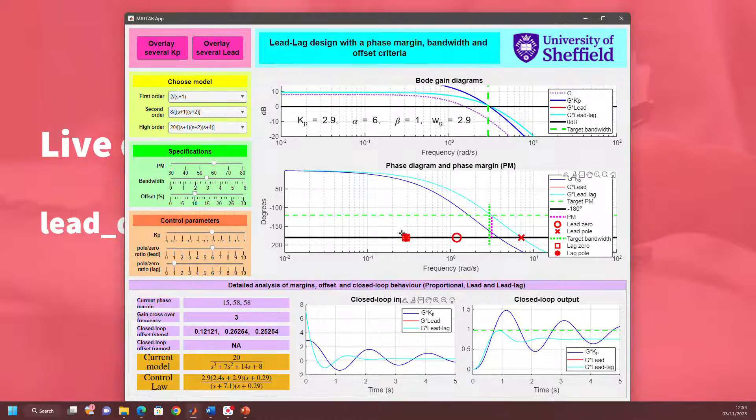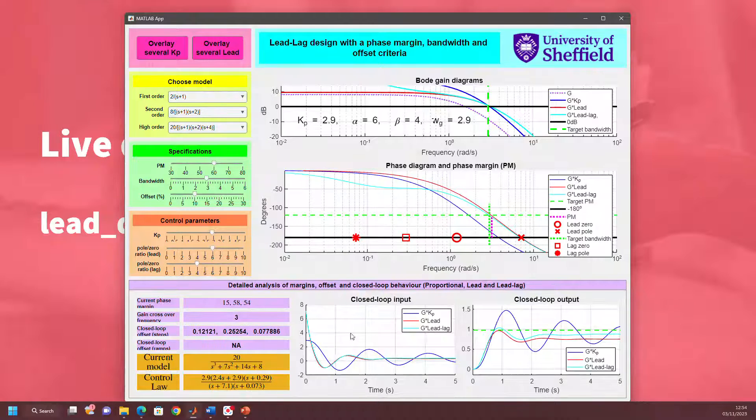Next step. Currently, the lag is doing nothing. The pole and zero are at the same place. But look at my offset. You can see I'm settling quite a long way away from where I want to settle. So I now need to increase the gain. Let's try a pole-zero ratio of something like 4. We're beginning to get closer to our offset criteria. Maybe that offset criteria is going to end up being too ambitious. Let's go all the way to 10.